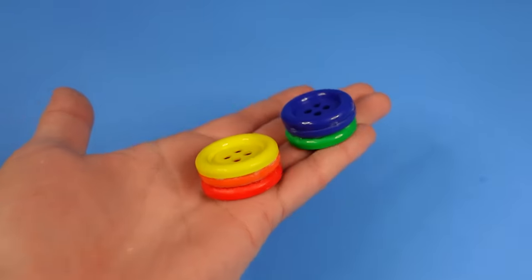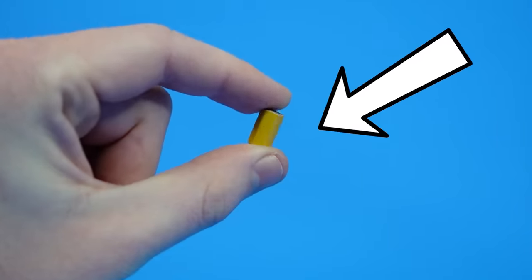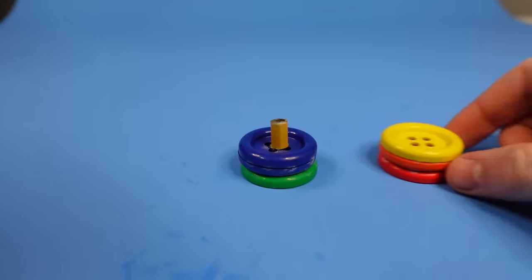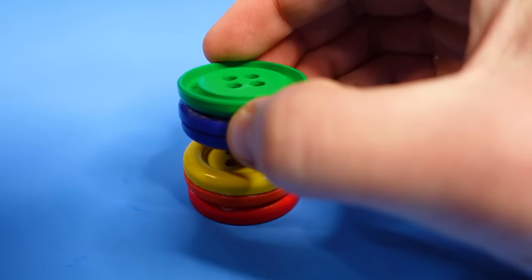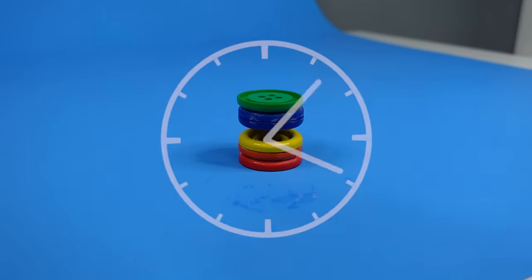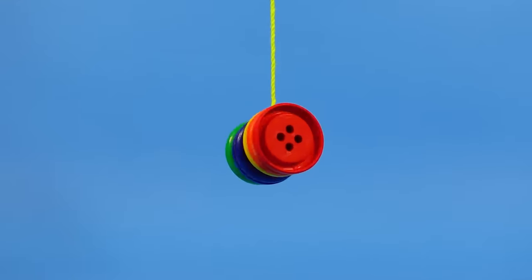And to connect the halves together, I'm going to use a pencil for the axle. A very small portion of a pencil, that is. I use some more glue to secure the axle to one half and use the same method to attach the other half. And after leaving it to dry for a bit, the button yo-yo was complete.